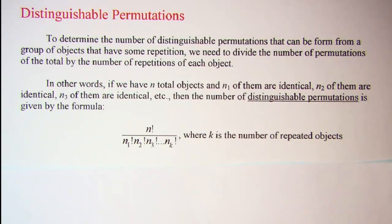In this video we'll be talking about distinguishable permutations. To determine the number of distinguishable permutations that can be formed from a group of objects that have some repetition, we need to divide the number of permutations of the total by the number of repetitions of each object.